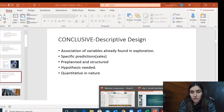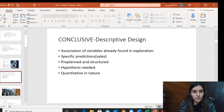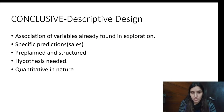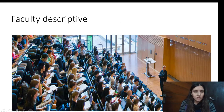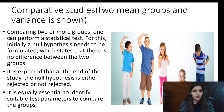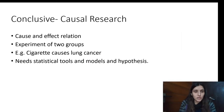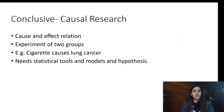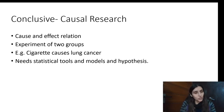Now let's come to causal research. This is the third type of research design, which is causal research. In causal research, the variables are known.